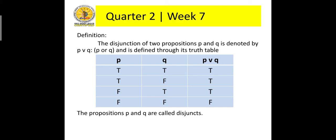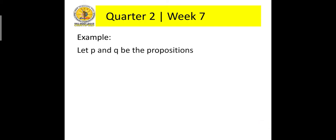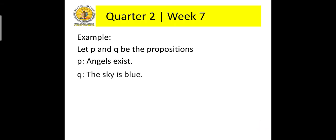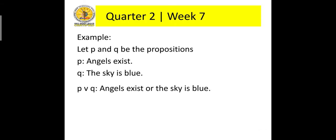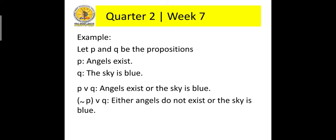The disjunction of two propositions P and Q is denoted by P or Q, and is defined through its truth table, as shown below. The propositions P and Q are called disjuncts. For example, P or Q: 'Angels exist or the sky is blue.' Not P or Q: 'Either angels do not exist or the sky is blue.'